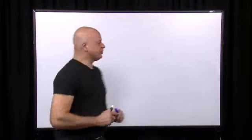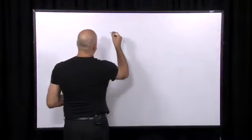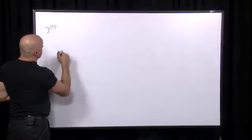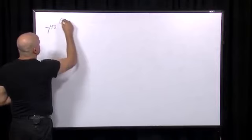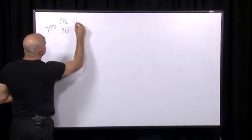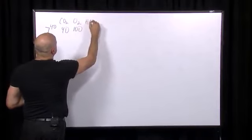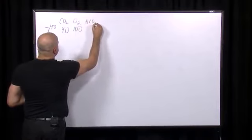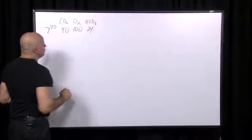Here's the next part on metabolic acidosis and alkalosis. When analyzing blood gases, normal values are: pH 7.40, pCO2 40, O2 100, and bicarbonate 24.